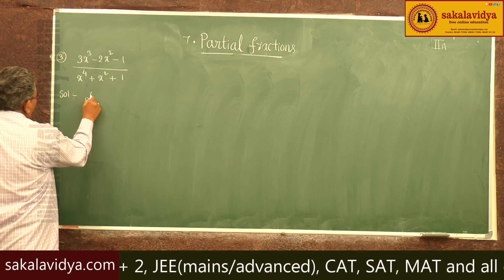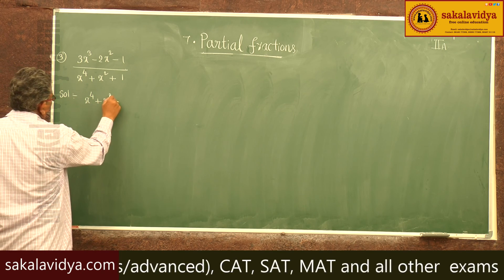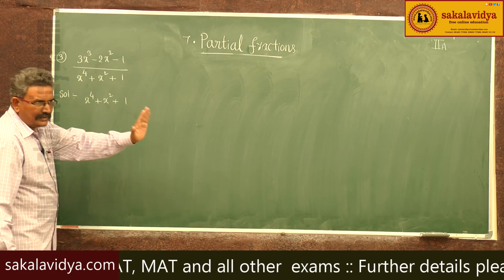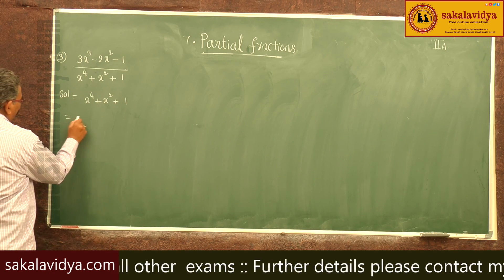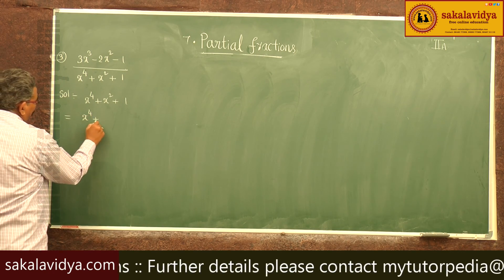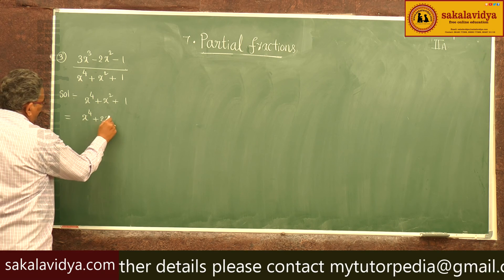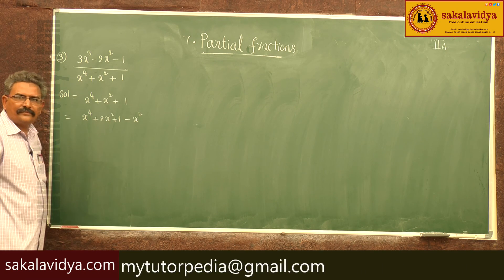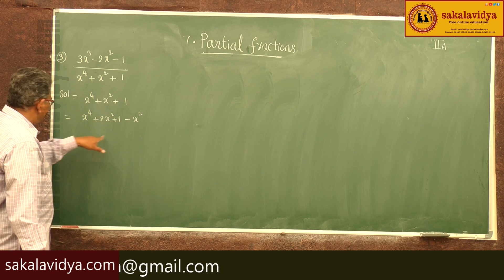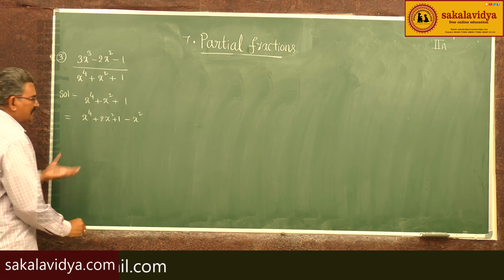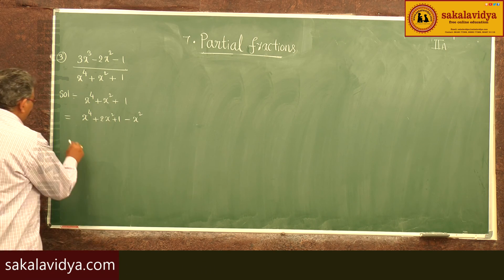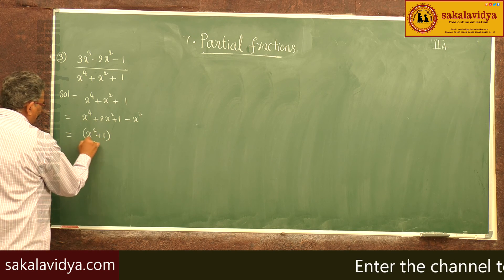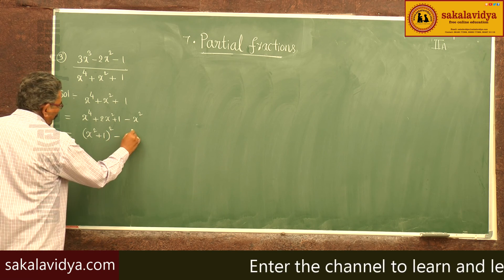x⁴ + x² + 1 — add x² and subtract x². So we can write x⁴ + 2x² + 1 minus x². Observe that the first three terms form a perfect square, so this becomes (x² + 1)² - x².